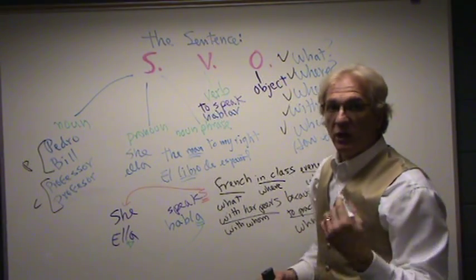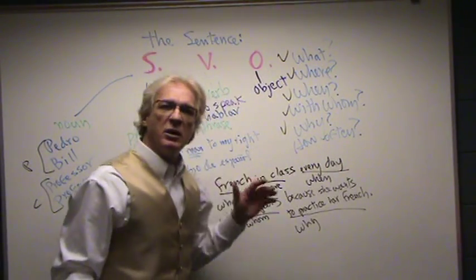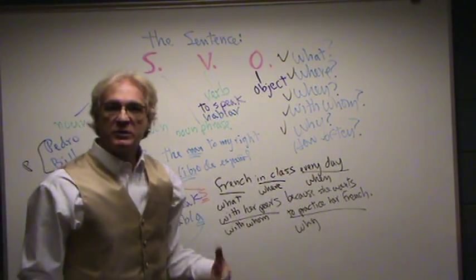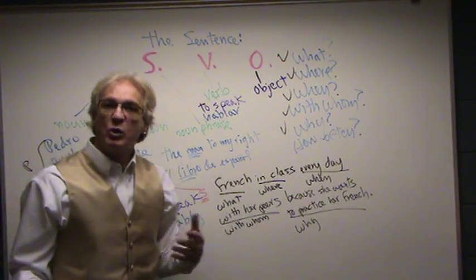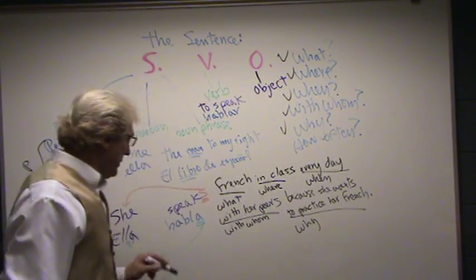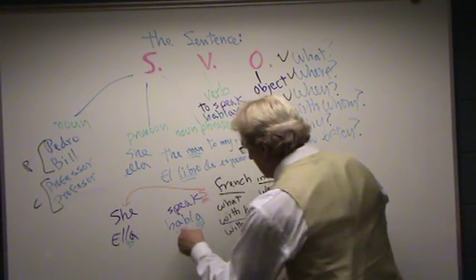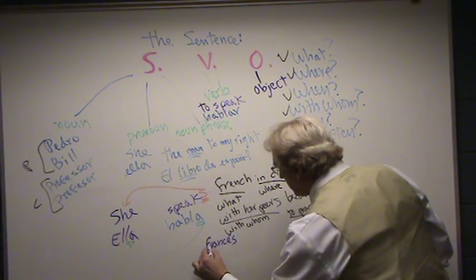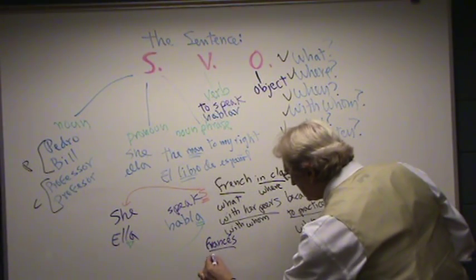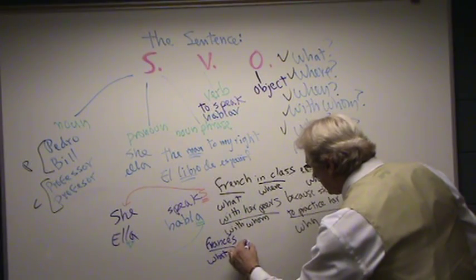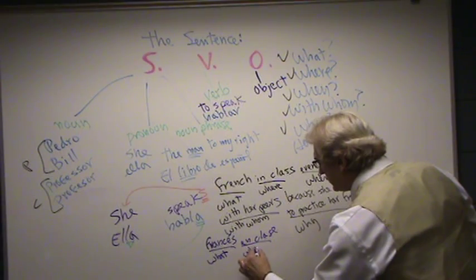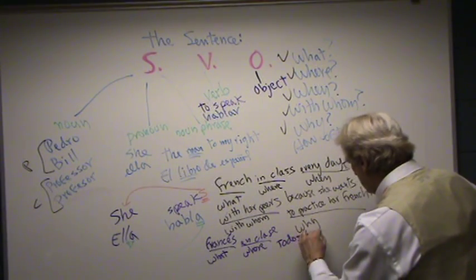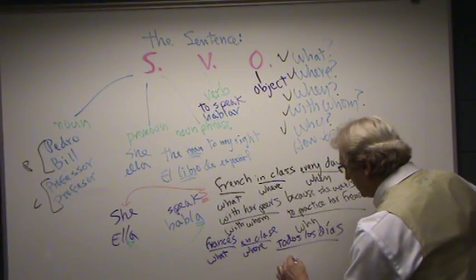You get the picture. The object is a collection of additional information: what is it the person does, where, when, how often, with whom, and the reason. In Spanish that would be: Ella habla francés — that's the what — en clase — that's the where — todos los días — that's the when.